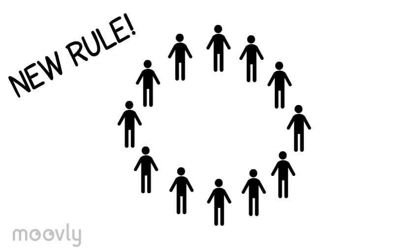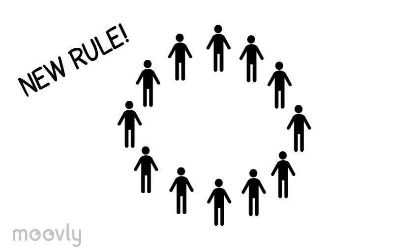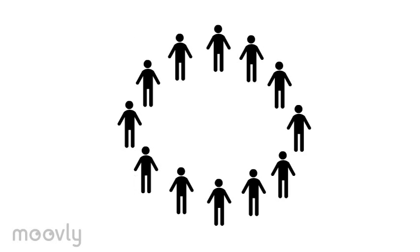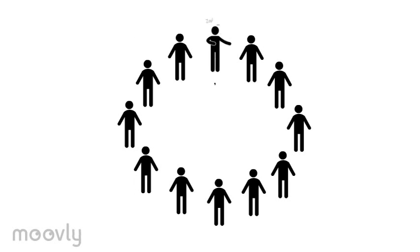When the team is ready, you introduce the new rule: zap. When the turn gets passed on to someone directly next to the participant, they don't say zip but they say zap to their neighbor instead.